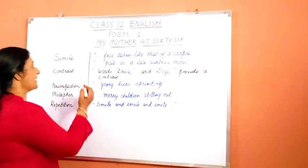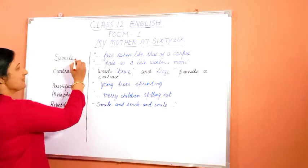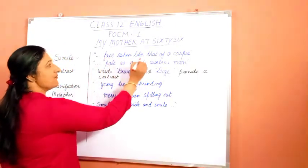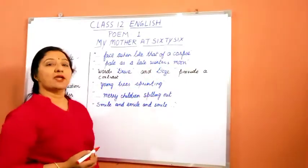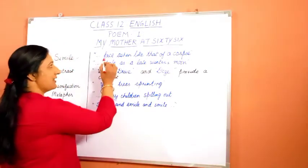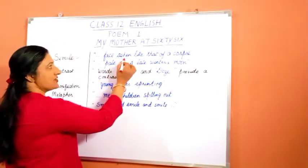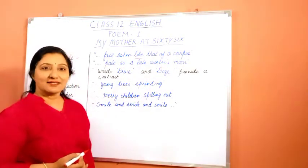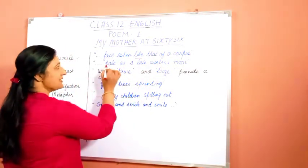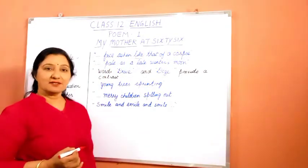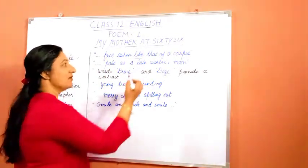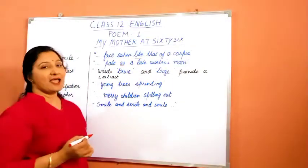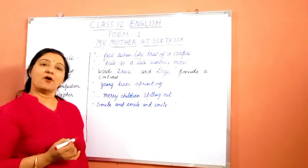The first poetic device used by the poet is a simile, which is a comparison. The face of the mother is compared to a corpse in the line 'face ashen like that of a corpse'. The next expression is the poet's mother's face compared to a late winter's moon — the word 'as' is used here, making it also an example of simile.